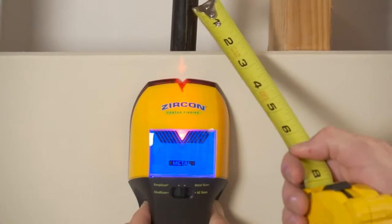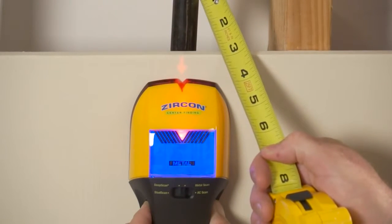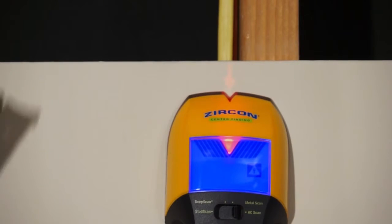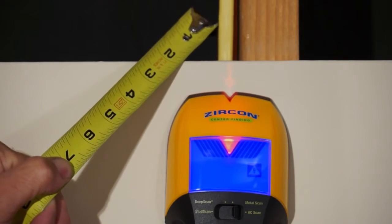metal scan to find metal up to three inches deep, and AC scan to find live unshielded electrical wiring up to two inches deep.